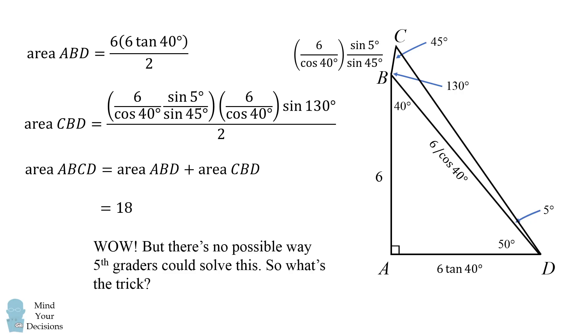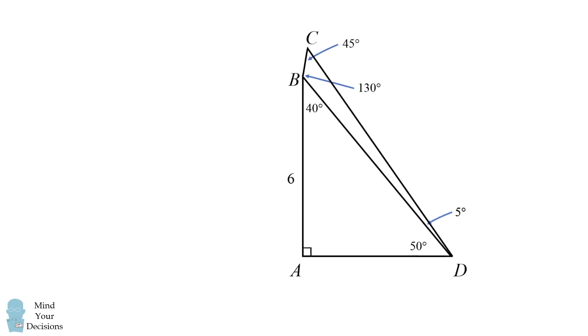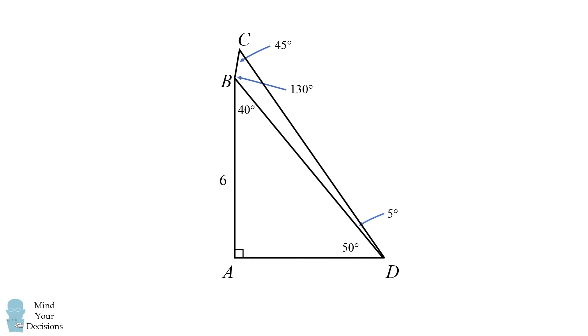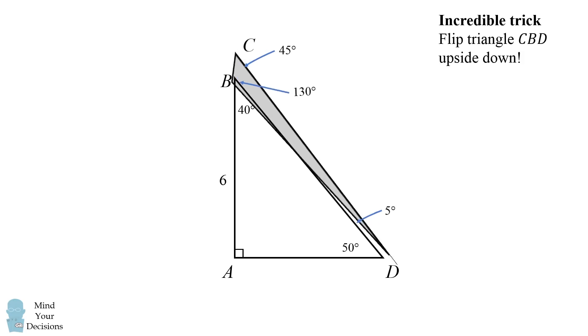Wow! How does it all come down to 18? What's the trick? So here we go. The incredible trick is to flip triangle CBD upside down. So we'll focus on triangle CBD and now let's flip it upside down.